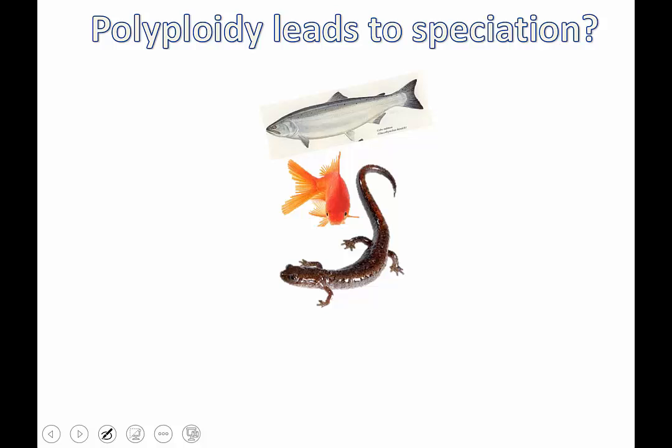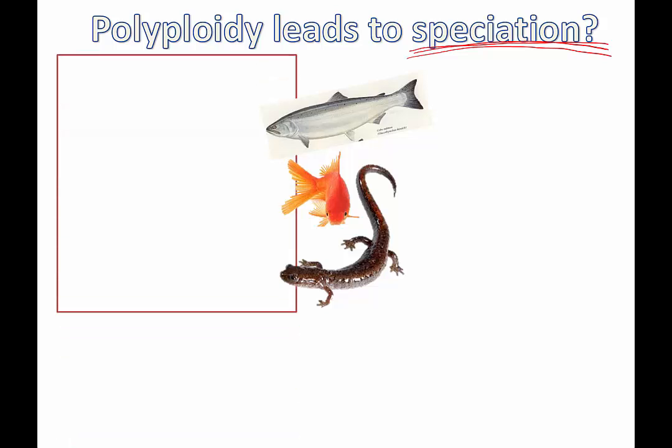Speciation means the creation of a new species, and this can happen in many different ways. Different scientists debate about what needs to happen for a group to be considered a new species. For example, behavioral isolation — certain animals not responding to signals sent by other animals and therefore not mating under natural circumstances — is one reason scientists might say they're different enough to be called different species. Here's another way.